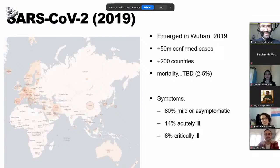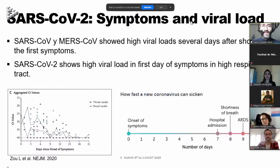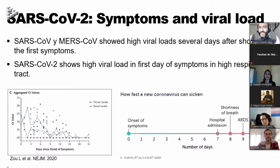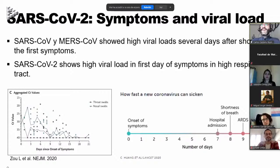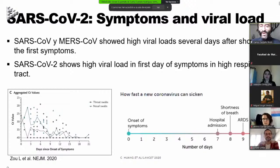But this is not the only thing accounting for this spread. There is a relationship between symptoms and viral load. In the case of SARS and MERS-CoV, both viruses showed high viral loads only days after the host shows first symptoms. But on the contrary, SARS-CoV-2 shows high viral loads on the first day of symptoms in the upper respiratory tract, and even before having symptoms it is highly transmissible. This is definitely one of the reasons why the virus spread without anyone knowing.